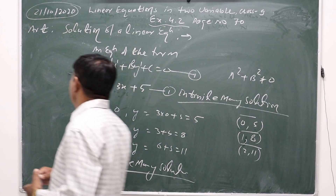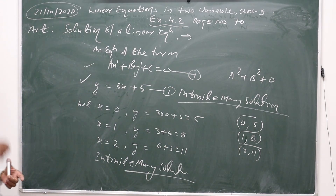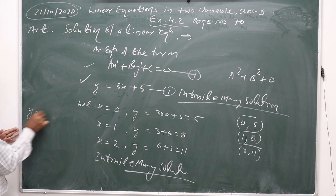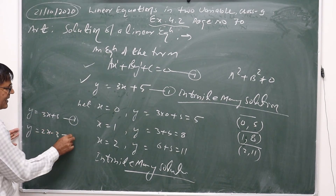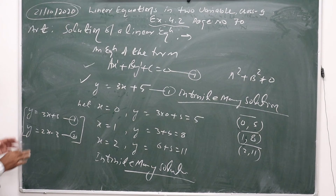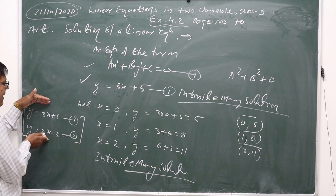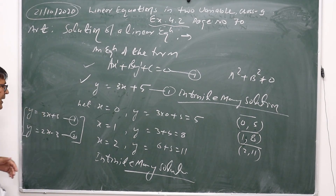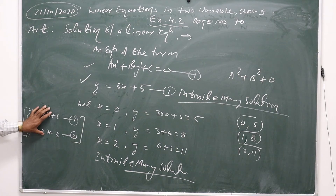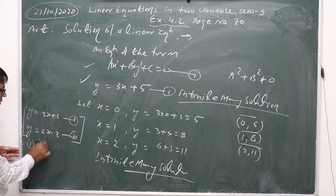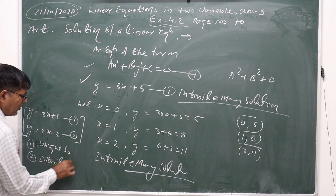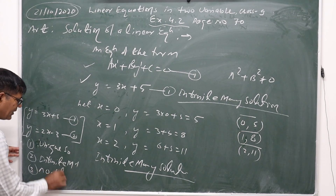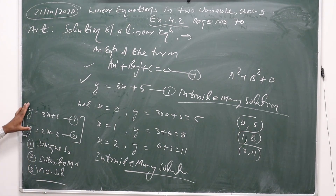In the next class, Class 10, we will discuss the solution of a pair of linear equations. A pair of linear equations means, for example, the first linear equation is y equals 3x plus 5, and the second is y equals 2x minus 3. When we have two linear equations, this is called a pair of linear equations, and it may have three different types of solutions: unique solution, infinitely many solutions, or no solution.